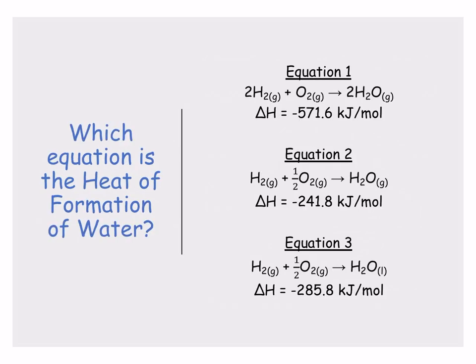Have a look here. The heat of formation of water — we've got three equations. Which one would you think is the actual equation? The first thing we need to do is make sure that the equation is balanced. We also need to make sure that our state symbols, as you can see beside the 2H2 there's a little G, are equivalent to the standard state at 25 degrees and 101 kilopascals. We know it cannot be equation 1 because it would have water in a gaseous state at 25 degrees.